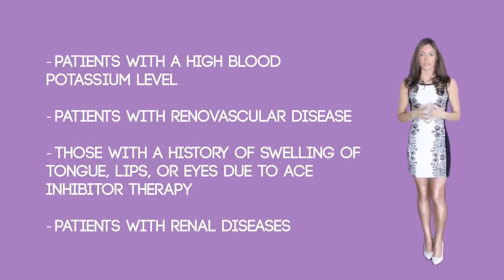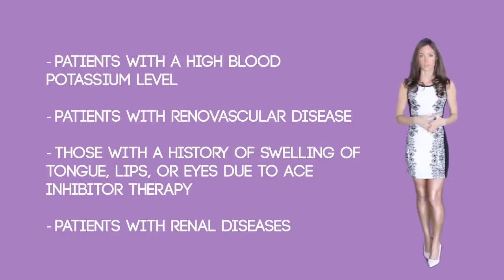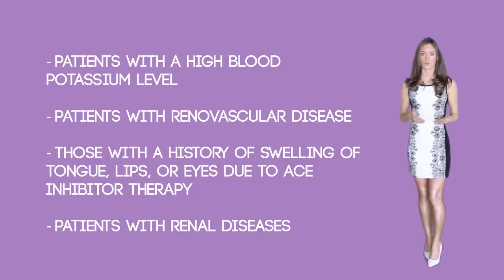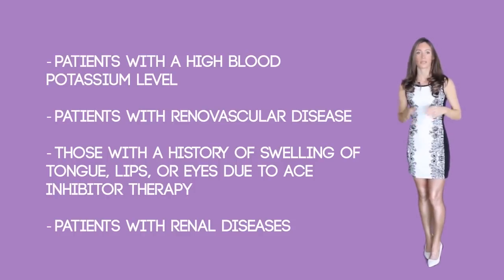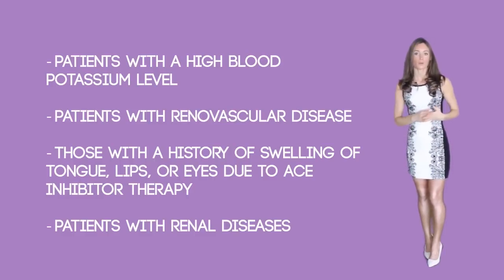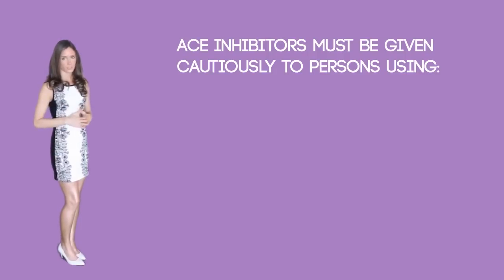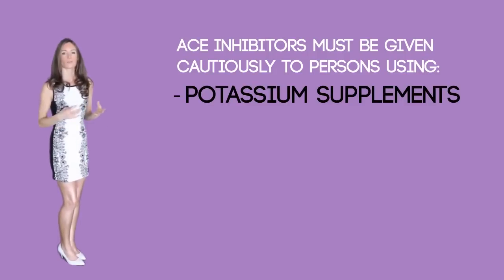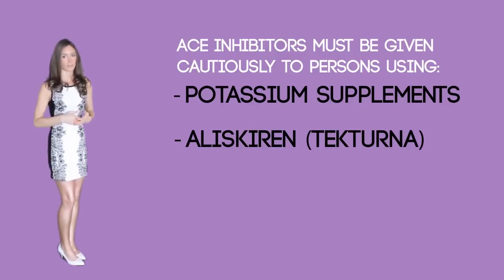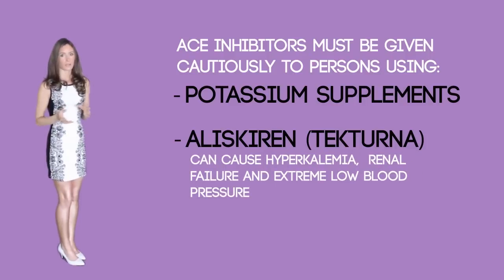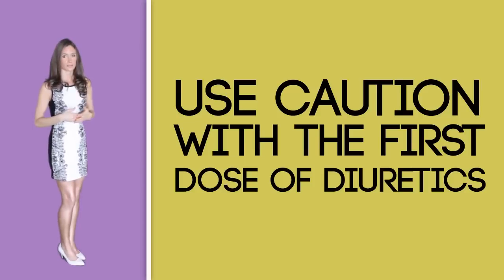For patients with high potassium levels, because ACE inhibitors can lead to higher blood potassium levels, you may need to hold the medication as well. Patients with renal disease like renal artery stenosis should not take the medication either, because ACE inhibitors worsen renal function in patients with renal vascular disease — a renal disease caused by narrowed blood vessels. ACE inhibitors must be given cautiously to persons using potassium supplements or other medications that can elevate blood potassium levels. Tecturna, if taken together with an ACE inhibitor, can cause hyperkalemia, renal failure, and extreme low blood pressure and needs to be avoided.